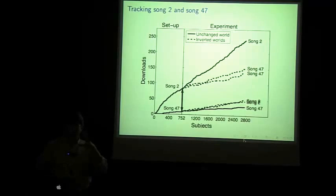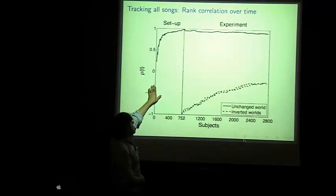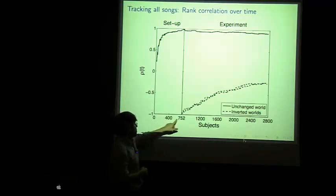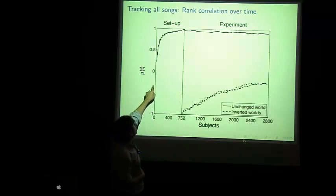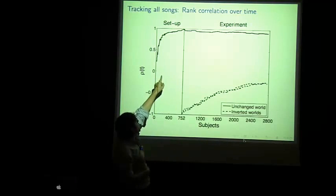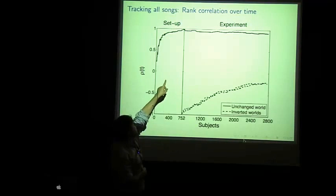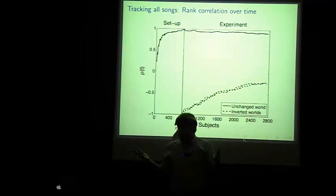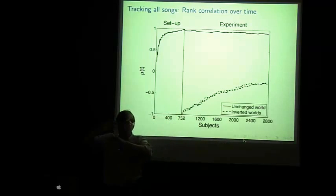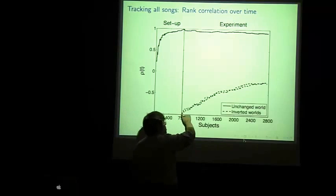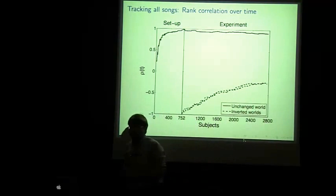Now, if we look at the entire market as a whole, we get something that looks like this. Here what we've plotted is the rank correlation to the final outcome at the end of the setup period. Here we see that very quickly the system moves into something that's very closely correlated to its final configuration. And then, in the unchanged world, it basically stays about where it was, which is what we would expect. Here, the inversion, we go to a minus 1 rank correlation. And then, we see that the world gradually starts to recover, but it seems to get stuck at some intermediate state.